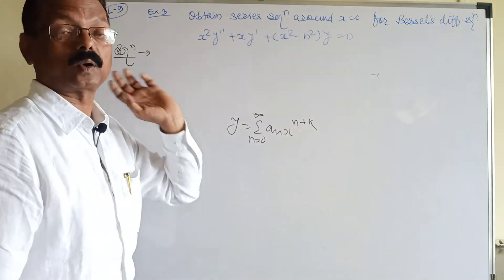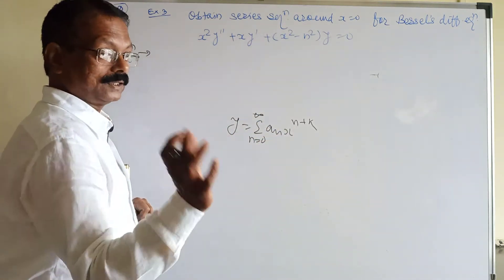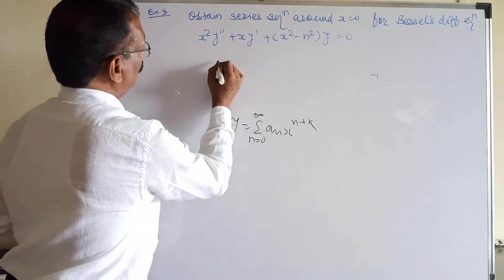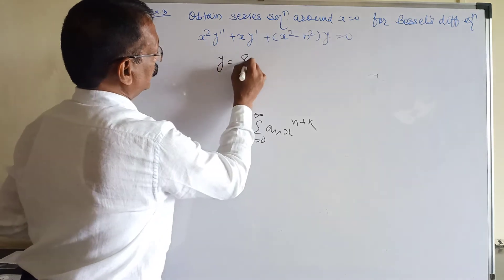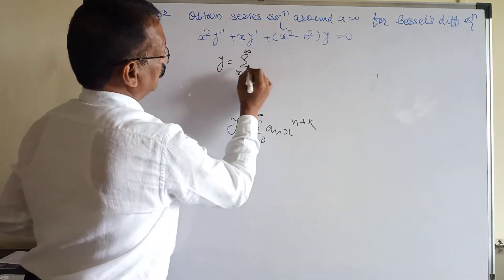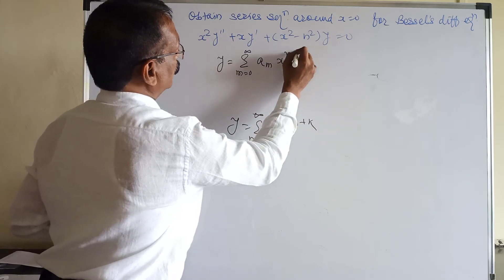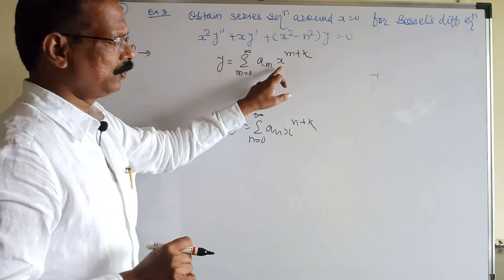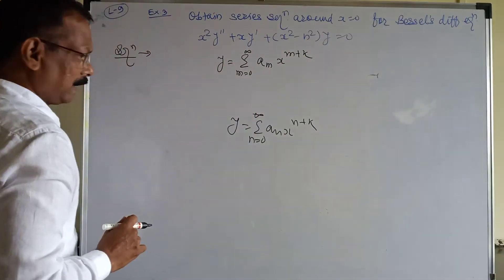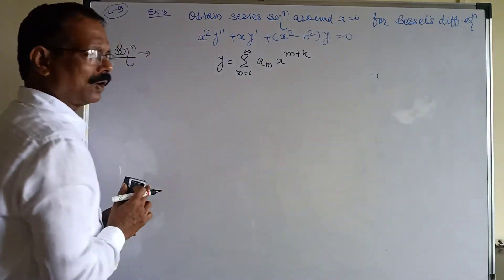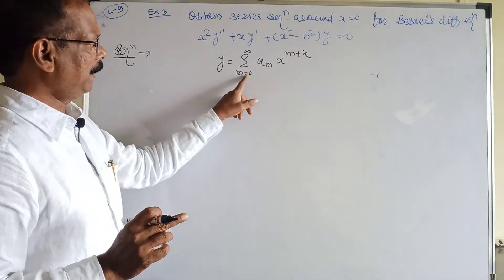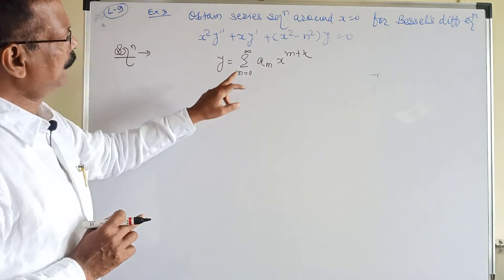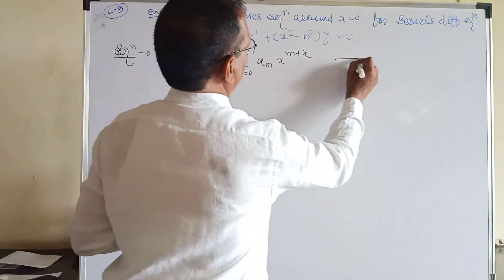Instead of n, we write m. So our solution is y = Σ aₘ x^(m+k), where m runs from 0 to infinity — this is equation (1). Differentiating, y' = Σ aₘ (m+k) x^(m+k−1) — equation (2). Differentiating again, y'' = Σ aₘ (m+k)(m+k−1) x^(m+k−2) — equation (3).